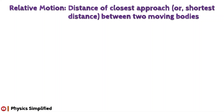Suppose two bodies are moving with constant velocities in any directions. In order to determine the distance of closest approach, or the shortest distance between them, we usually apply the method of calculus. However, we can apply the concept of relative velocity to calculate the same effectively. We will discuss both methods one by one in this video.